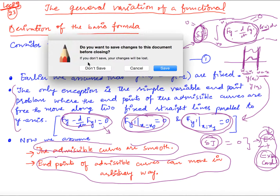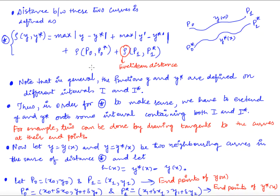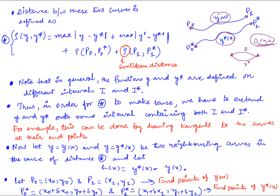Suppose y(x) and y*(x) are two admissible functions. In the earlier case the endpoints were fixed, but now these endpoints can freely move. We were in the space D1[A,B] — the space of all functions with continuous first-order derivatives — and we defined the distance between y and y* as: maximum of |y − y*| plus maximum of |y' − y*'|.